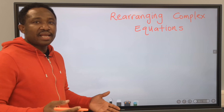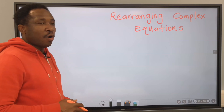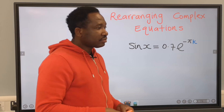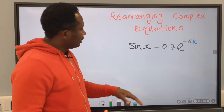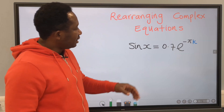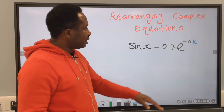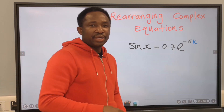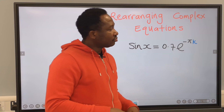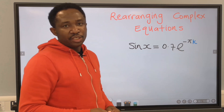Let's learn how to rearrange complex equations. For example, sin x equals 0.7 exponential minus pi k. We're going to make k the subject.